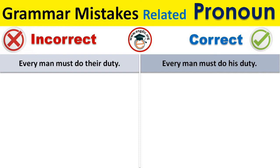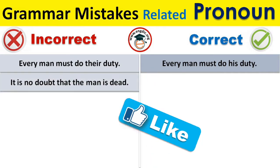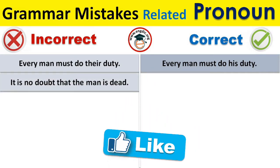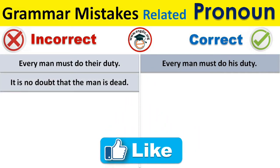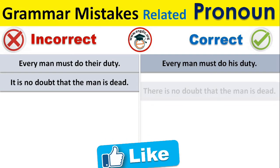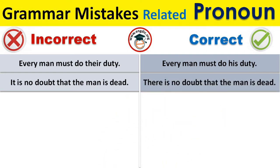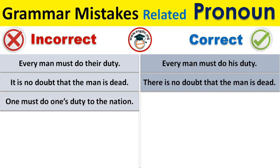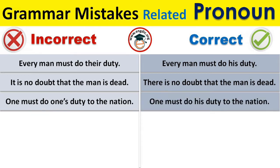Next: 'It is no doubt that the man is dead' is incorrect. The correct sentence is 'There is no doubt that the man is dead.' Also, 'One must do one's duty to the nation' is incorrect; the correct sentence is 'One must do his duty to the nation.'